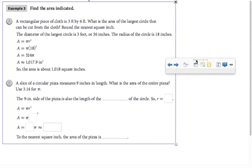So, let's use that formula to find the area. In part A, I am given the diameter to be 36 inches. So, I cut that in half to find the radius. I plug it in. I evaluate. In part B, I am given that a slice of circular pizza measures 9 inches in length, and then, I am asked to find the area of the entire pizza.